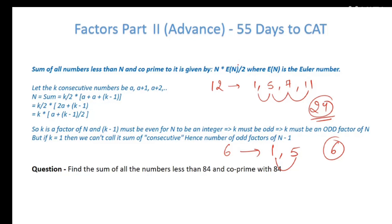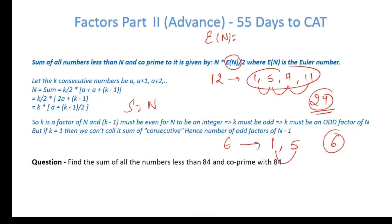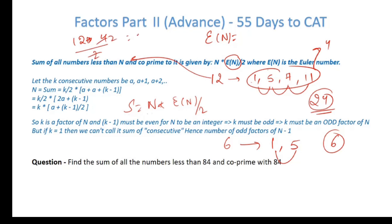How do we generalize this? The sum of all numbers less than a given number and co-prime to it is given by: Sum = n × φ(n) / 2, where φ(n) is Euler's totient. For 12, Euler's number is 4, so sum = 12 × 4 / 2 = 24. For 6, Euler's number is 2, so sum = 6 × 2 / 2 = 6.